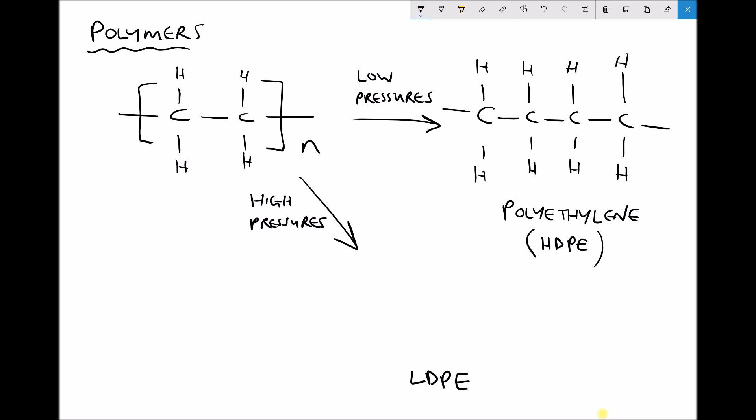And the way that low density polyethylene differs is as follows. We would still have a backbone of sorts. But then attached to that backbone we would also have branches. So we might have a branch that looks something like this: CH2, CH2, CH3.